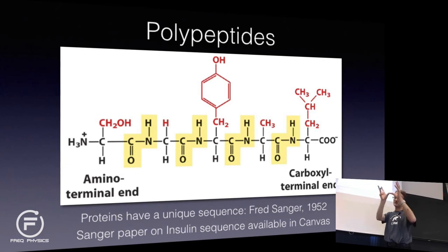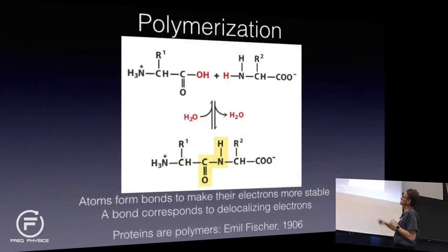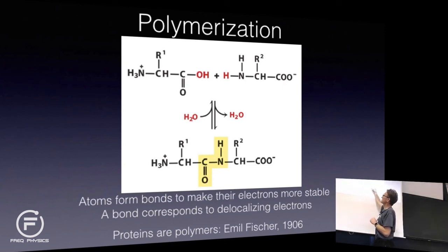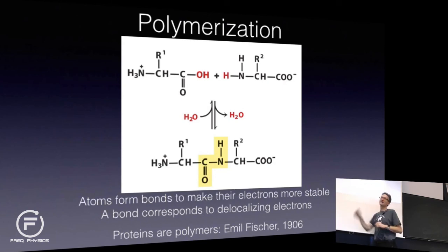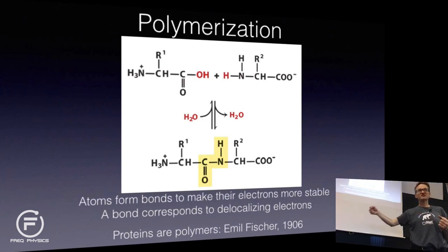If two amino acids move together, they can release a water molecule and instead form a larger molecule bound together. So you have one amino acid there, and one amino acid there — and if this happens again and again and again, which is what happens in the ribosome, you create a very long chain of amino acids.